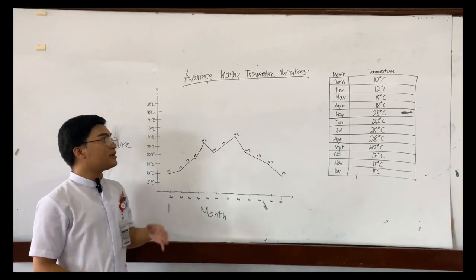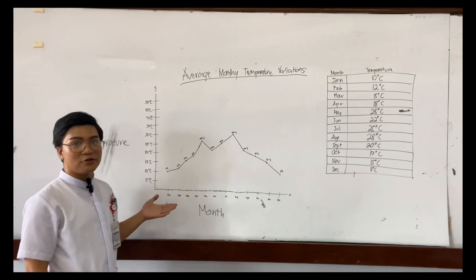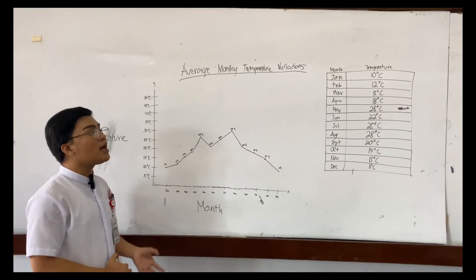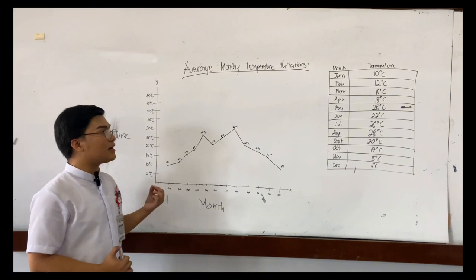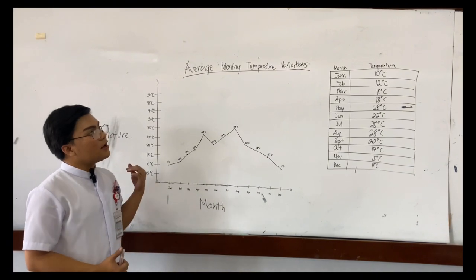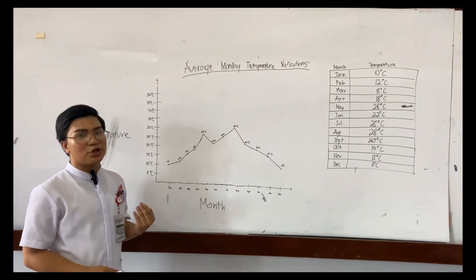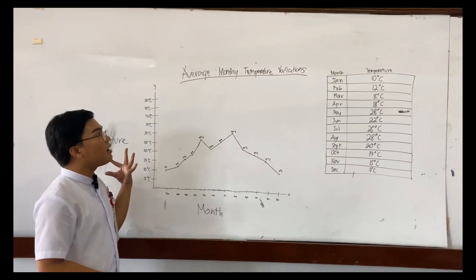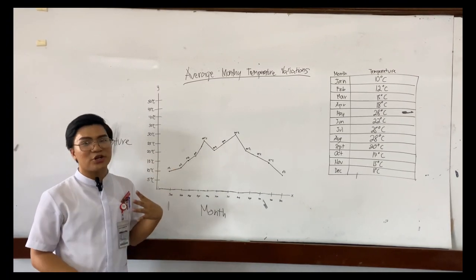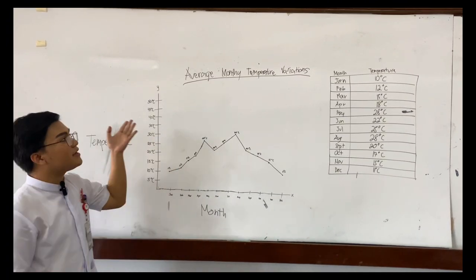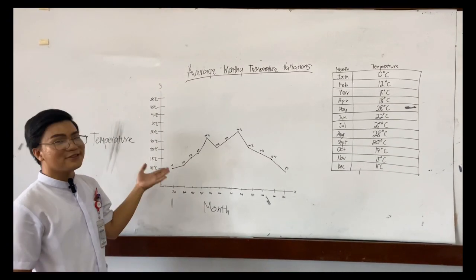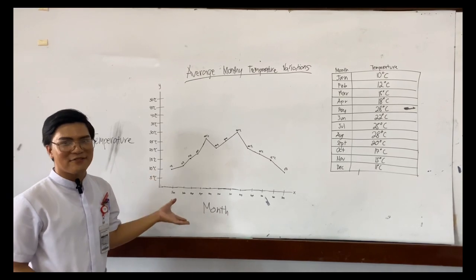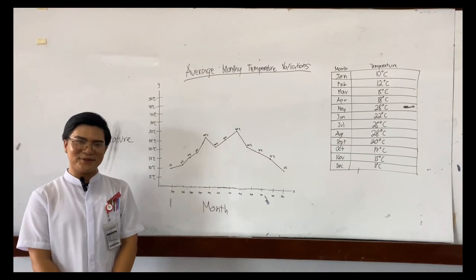Since we are done adding titles to the graph, we proceed to the last step: review and finalize. We have to make sure the given data is accurate to the graph and that the title is accurate as well. And that's all — thank you.